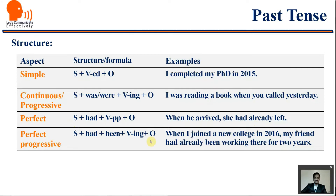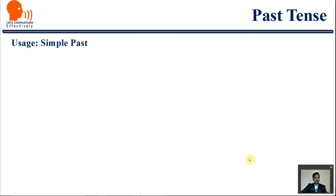For past perfect: subject plus had plus verb past participle and object. Example: 'When he arrived, she had already left.' For past perfect continuous: subject plus had been plus verb-ing and object. Example: 'When I joined a new college in 2016, my friend had already been working there for the last two years.'